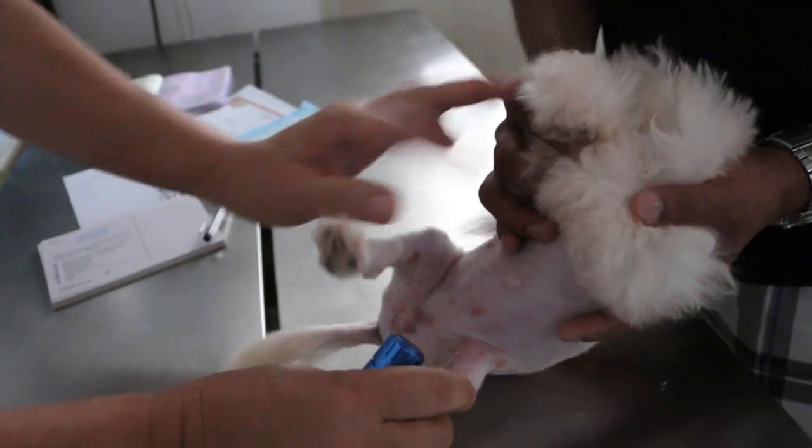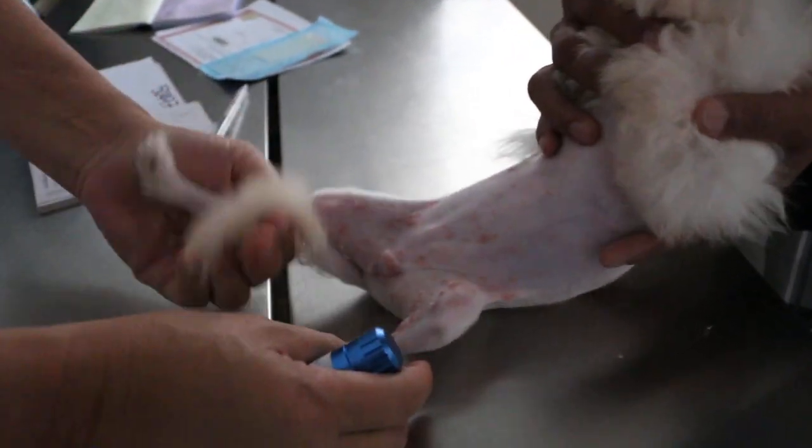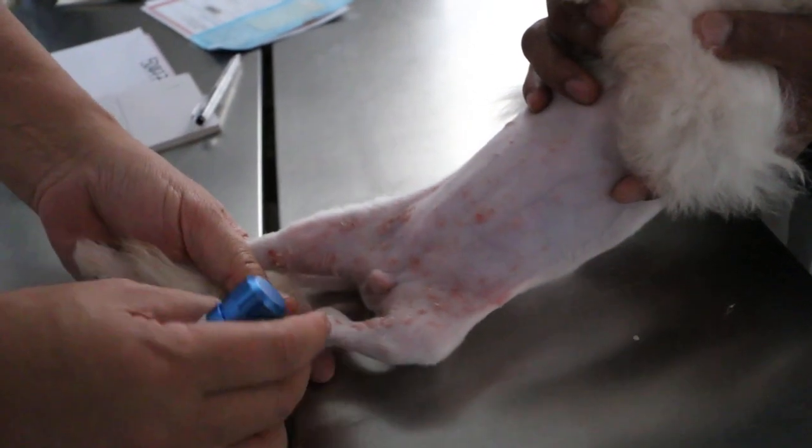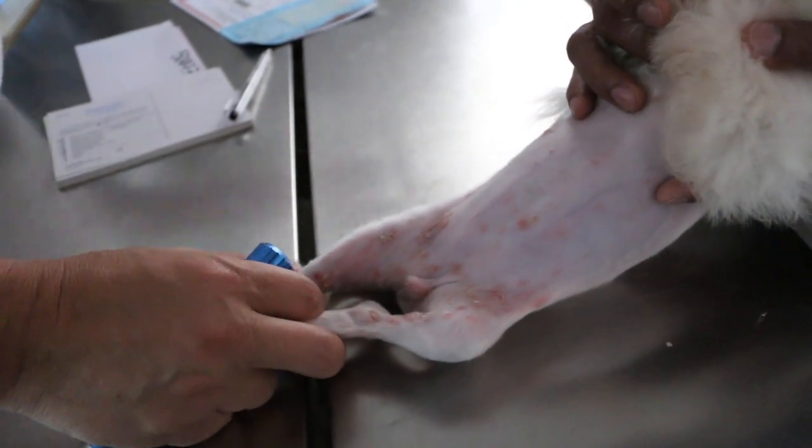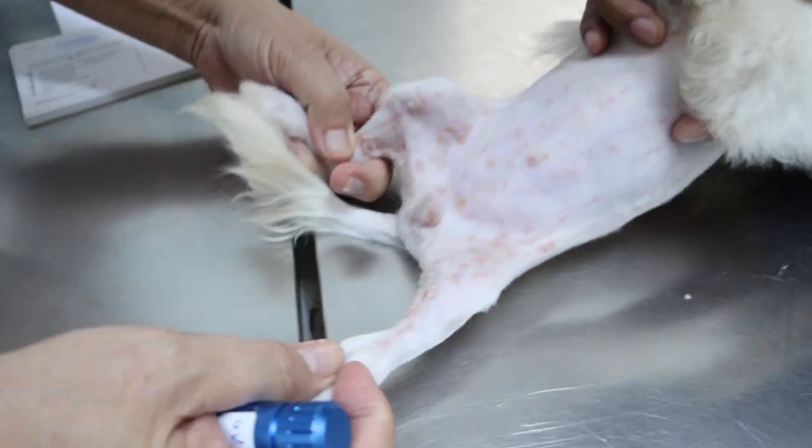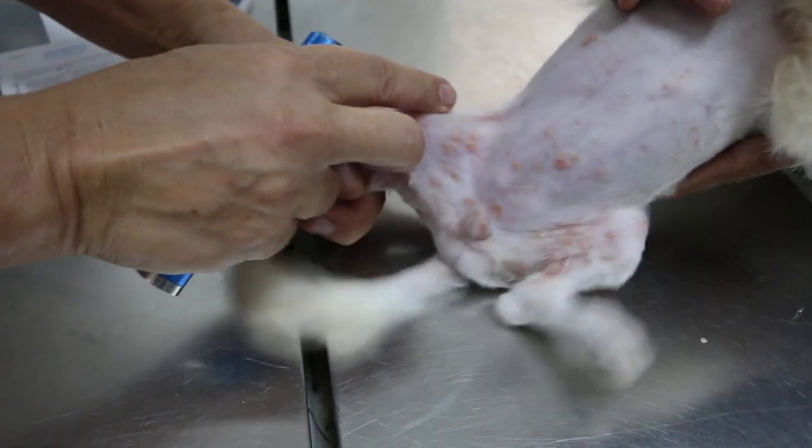29 June 2018. This is a three-month-old puppy. You came in for the third vaccination, but as you can see, there are a lot of rashes.